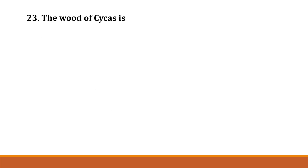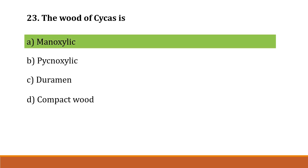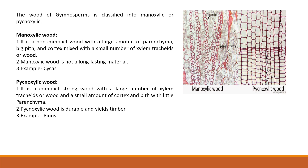Question number 23: The wood of Cycas is Option A: manoxylic, Option B: pycnoxylic, Option C: duramia, Option D: compact wood. The correct answer is Option A, manoxylic. Manoxylic wood means non-compact, loosely arranged wood with a large amount of parenchyma, large pith present, and cortex mixed with a small number of xylem tracheids. Manoxylic wood is not long-lasting, e.g. Cycas. Pycnoxylic wood is compact, spring wood with a large number of xylem tracheids and small amount of cortex with little parenchyma — durable and yields timber, e.g. Pinus. Gymnosperm wood is non-porous because it lacks vessels.